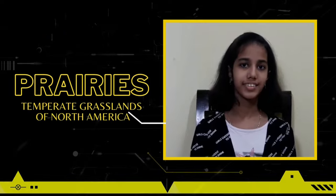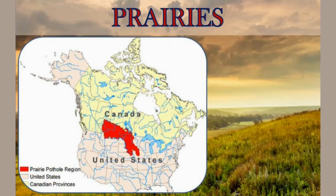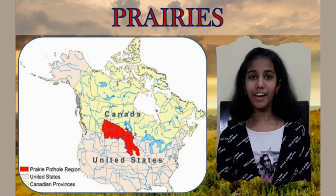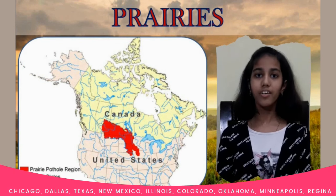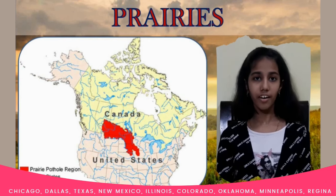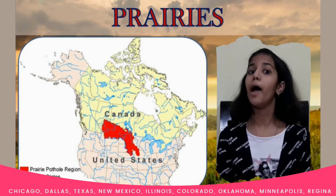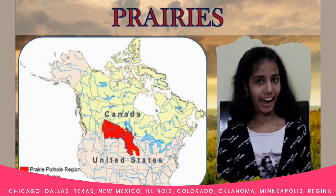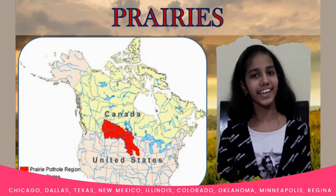Now let's have a look at prairies, the grasslands of North America. This is the location of prairies. The area marked in red is prairies. It is located between Canada and USA. The important places in prairies are Chicago, Dallas, Texas, New Mexico, Illinois, Colorado, Oklahoma, and Minneapolis in USA, and Regina in Canada.